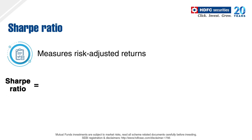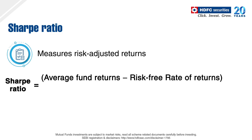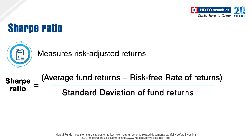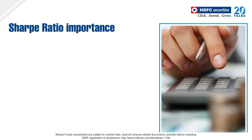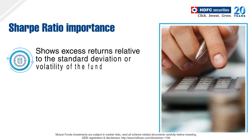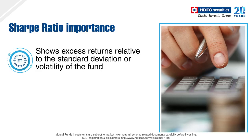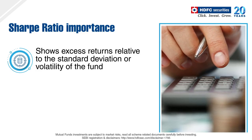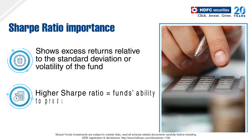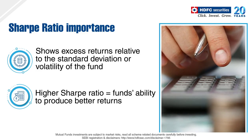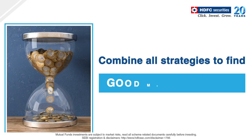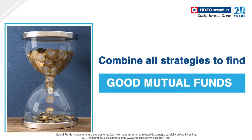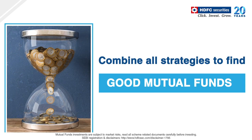You can measure your mutual fund's risk-adjusted returns with the Sharpe ratio. The Sharpe ratio is calculated by considering the average fund returns minus the risk-free rate of returns, and then divided by the standard deviation of fund returns. The Sharpe ratio shows the excess return you will earn relative to the standard deviation or volatility of the fund. If a fund's Sharpe ratio is higher in relation to its peers, it indicates the fund's ability to produce better returns. By combining all the above strategies, you can find good mutual funds generating excellent returns.